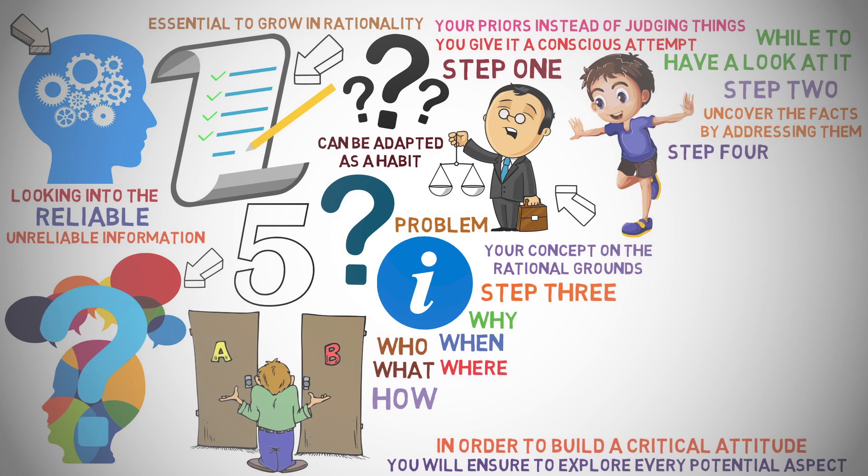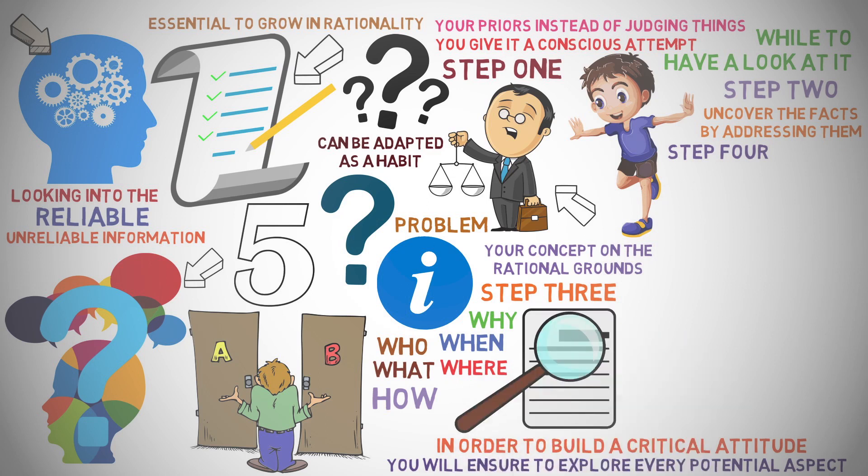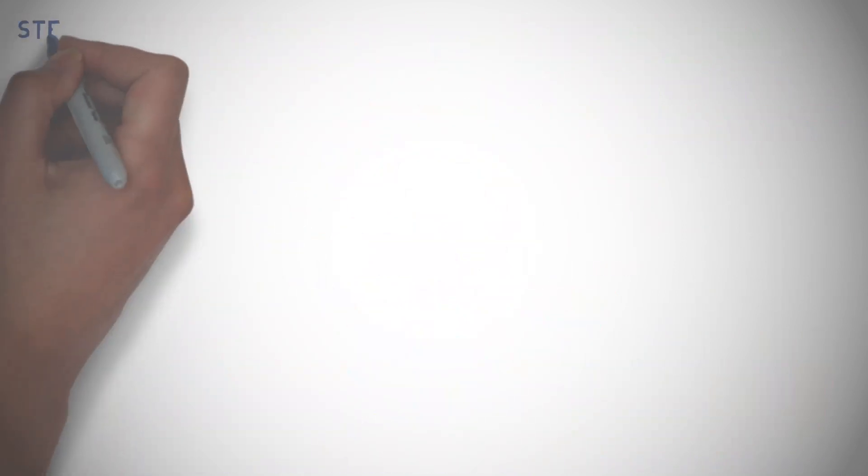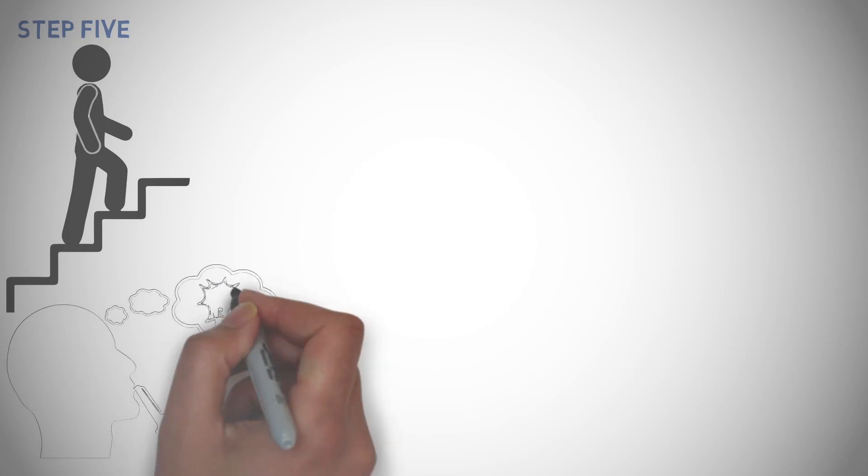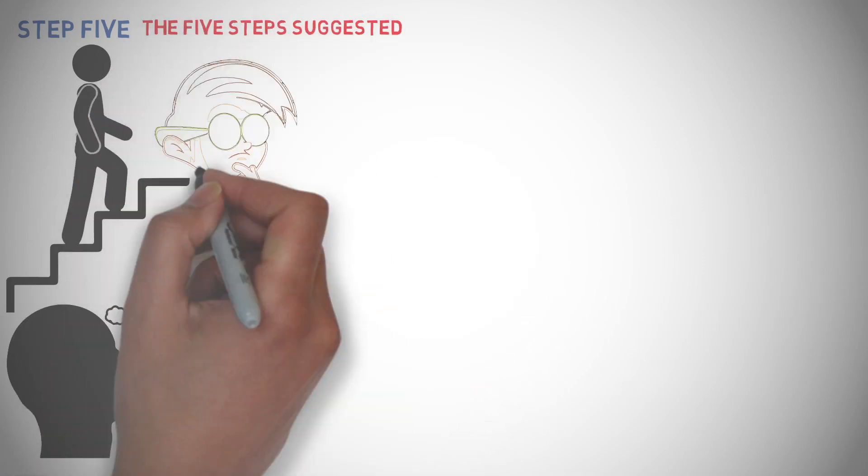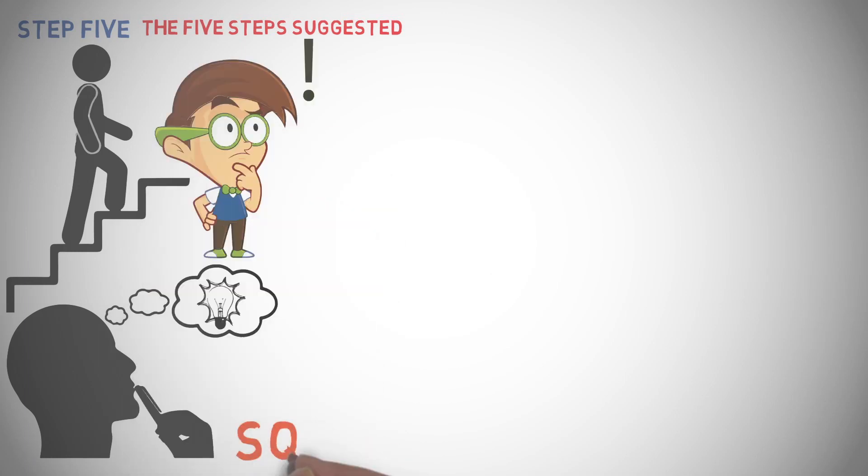Step 4. Analyze your information by keeping before the goals you want to acquire and know the possible results so that you can maintain focus and clarity. Step 5. Decide to take on your next practical step while having the potential outcomes in your mind. The 5 steps suggested can be easily remembered in the acronym form, SQUAD.